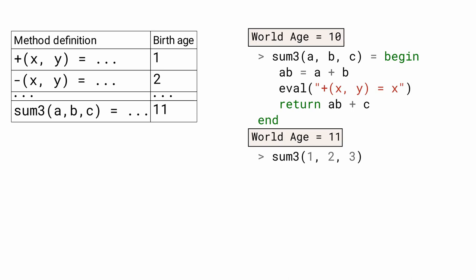Next, we call sum3 from the top level. When processing a top level goal, we remember the current value of the world age, in this case, 11.